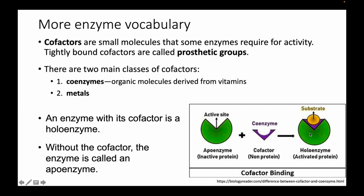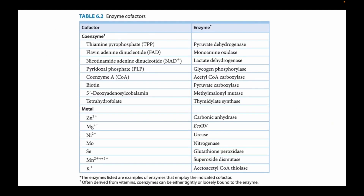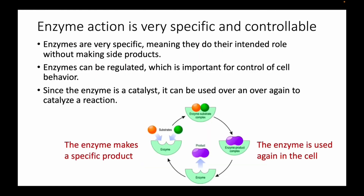Examples of enzyme cofactors: pyruvate dehydrogenase uses thiamine pyrophosphate as a coenzyme. Other common coenzymes include FAD, NAD+, and biotin — small organic molecules you may recognize as vitamins. Some enzymes require metal cofactors to function — typically metal ions. To summarize: coenzymes are organic cofactors derived from vitamins, while metals form the other main class of cofactors.